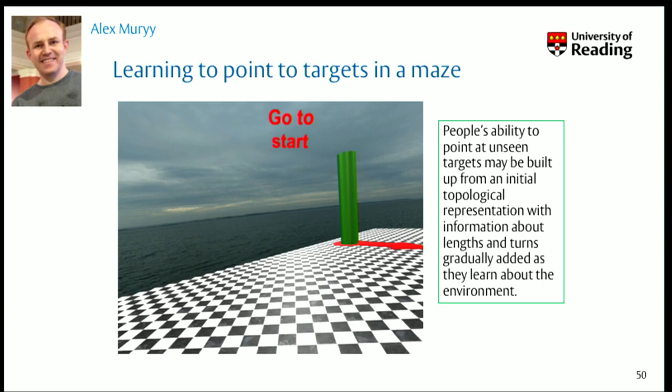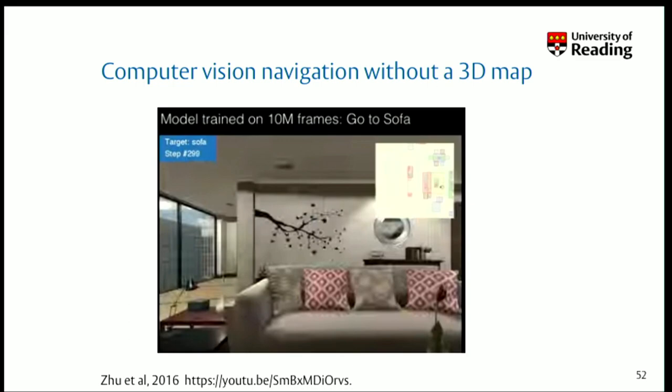Summary: people's ability to point to an unseen target may be built up from an initial topological representation. The first thing they learn is: red's down that corridor, blue's down that corridor, but I don't know the structure. Later, you add information about lengths and turns — Bill Warren talks about this as a model of what people are doing, and I think it's a good one.